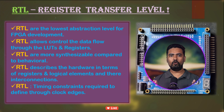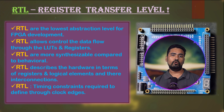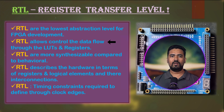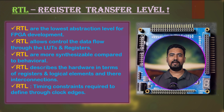Register transfer level, or RTL code, describes a digital circuit by specifying how data moves between registers. You can think of RTL code as the blueprint of your digital circuits, which uses registers and logical gates to describe how data will flow throughout the FPGA. To write RTL code effectively you need a solid understanding of your digital circuit, including the logical operations and how data flows between the registers.